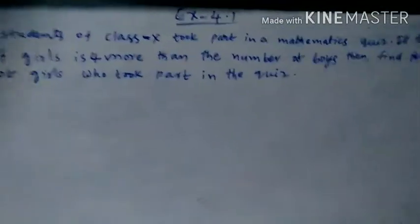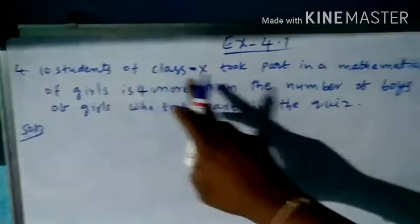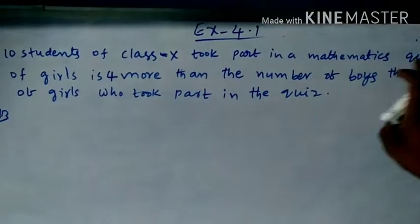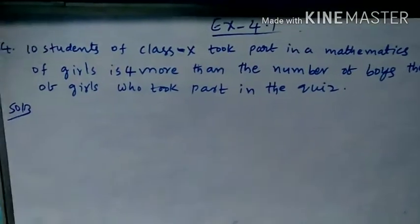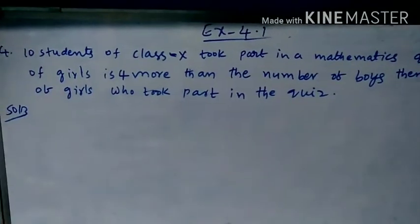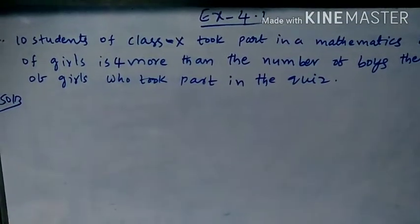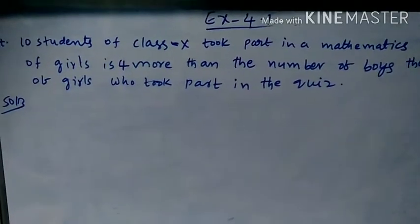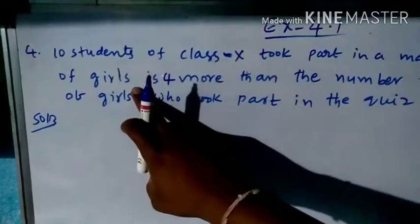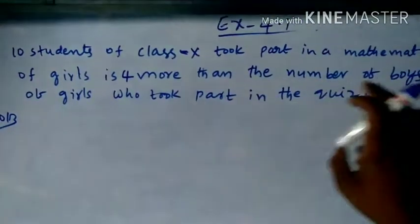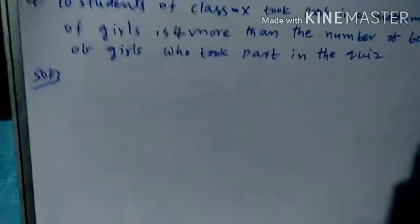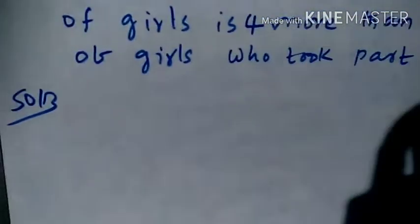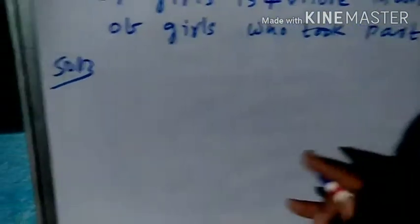Okay, try to understand the question. In class 10, 10 students participated in a mathematics quiz — both boys and girls — so the total number of students is 10. The number of girls is 4 more than the number of boys. For that, we are writing a pair of linear equations in 2 variables.